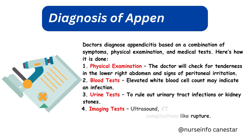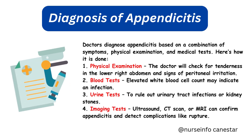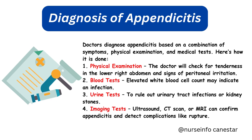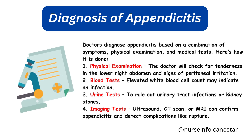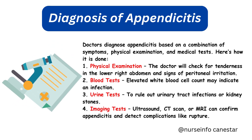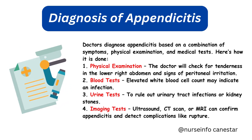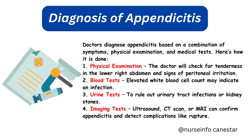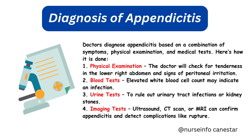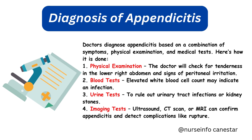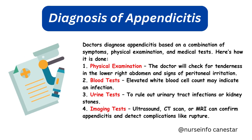Diagnosis of Appendicitis. Doctors diagnose appendicitis based on a combination of symptoms, physical examination, and medical tests. 1. Physical examination: The doctor will check for tenderness in the lower right abdomen and signs of peritoneal irritation. 2. Blood tests: Elevated white blood cell count may indicate an infection. 3. Urine tests: To rule out urinary tract infections or kidney stones. 4. Imaging tests: Ultrasound, CT scan, or MRI can confirm appendicitis and detect complications like rupture. A prompt diagnosis is essential to prevent serious complications.